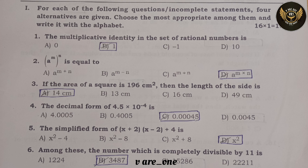Fourth question: the decimal form of 4.5 × 10⁻⁴ is option C: 0.00045.